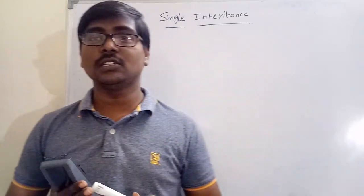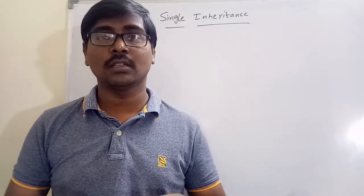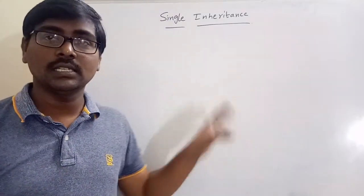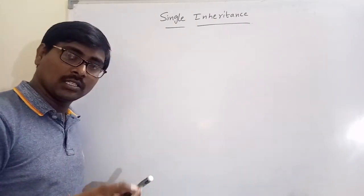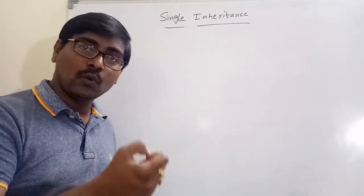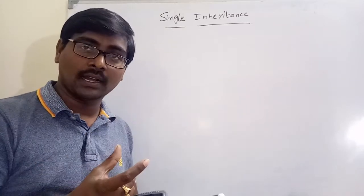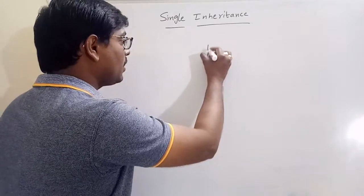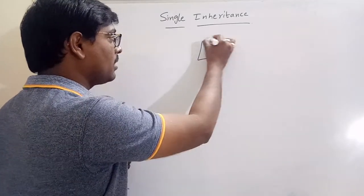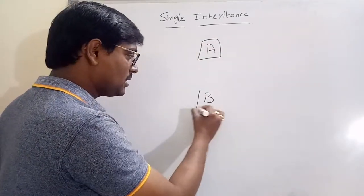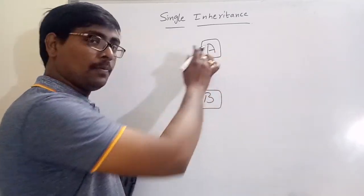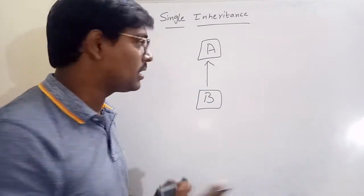Hi friends, welcome to our channel. In the previous session we discussed different types of inheritance. Now we will discuss single inheritance. Single inheritance is when one class acquires the properties from another class — that is, we have a single child and a single parent. For example, A is the parent class, B is the child class, and B acquires the properties from class A.